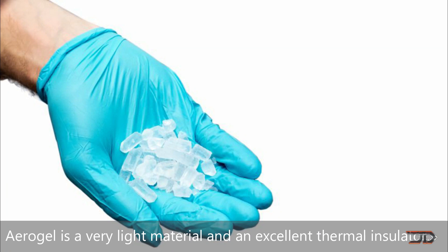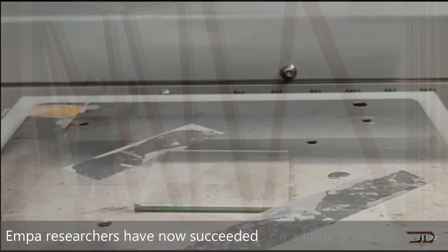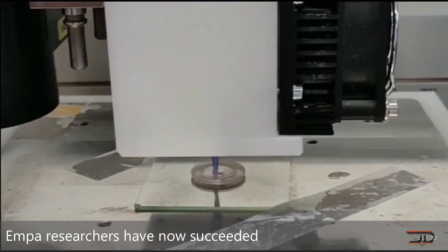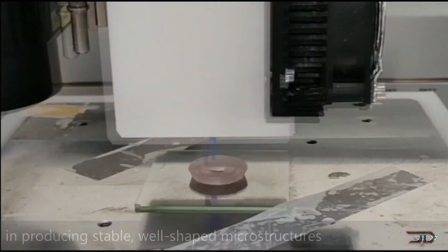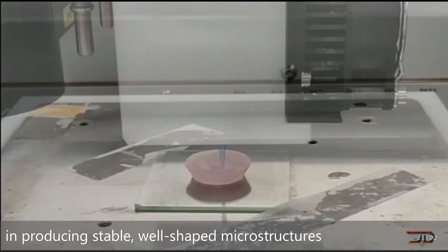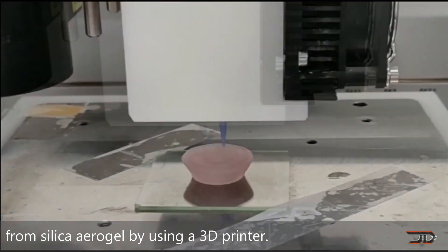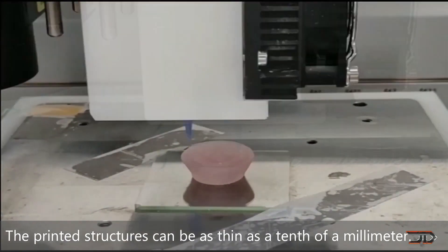So EMPA researchers have succeeded in 3D printing aerogel at 0.1mm accuracy. With this new method, it is possible to adjust the flow and solidification of the silica ink, so that the aerogel is self-supporting, and wafer-thin membranes can be printed.